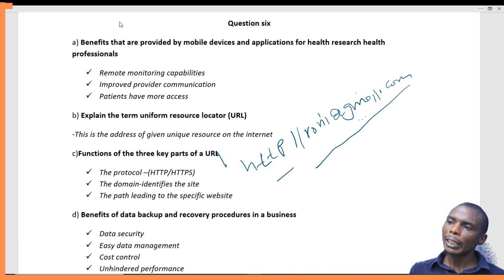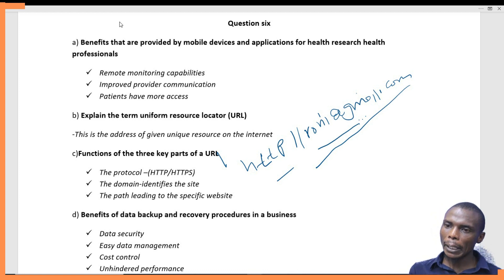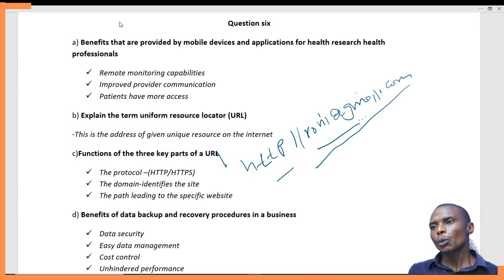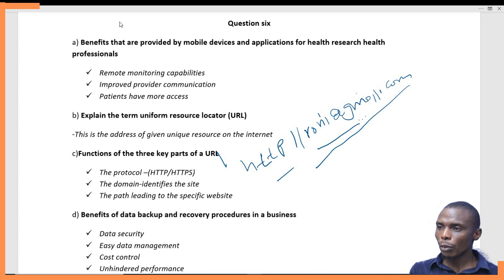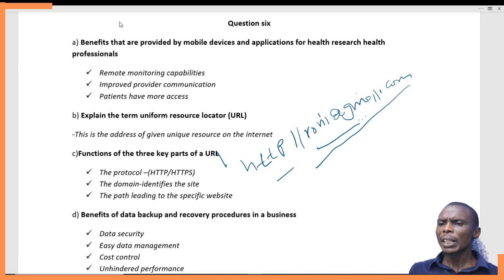The second part of the URL is what we call the domain. In this example, gmail.com is the domain. It identifies the site — which site you are looking for. In this case it is Gmail; somebody else could be using Hotmail or Yahoo. So the domain identifies the site.